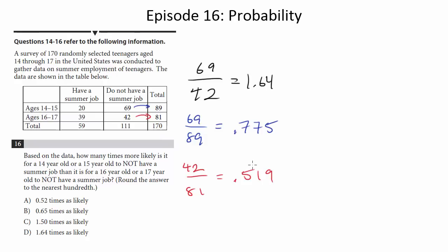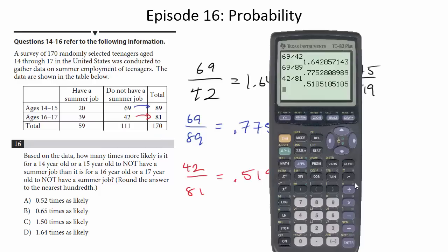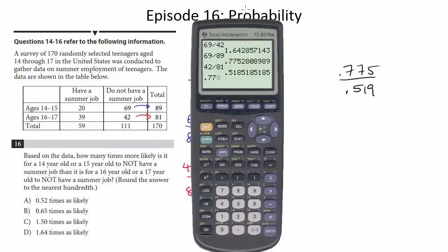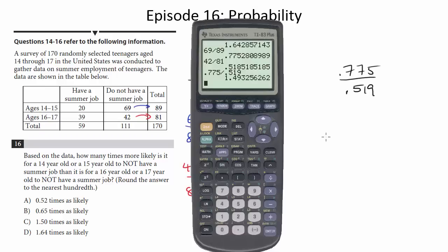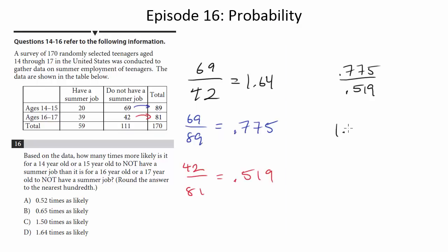Now we divide these two to find the ratio or to find how much more likely it is that these guys are going to be not having a job compared to these guys. Just like we did before, divide them, but divide the probabilities, not the raw numbers. So here we're going to do 0.775 divided by 0.519. Let's see what we get. 0.775 divided by 0.519 gets me 1.49.